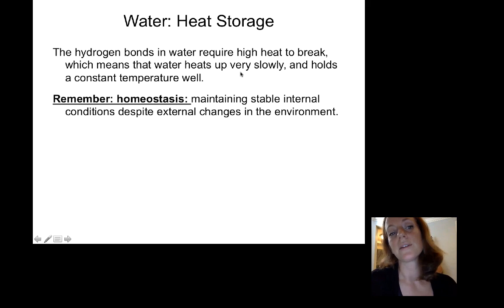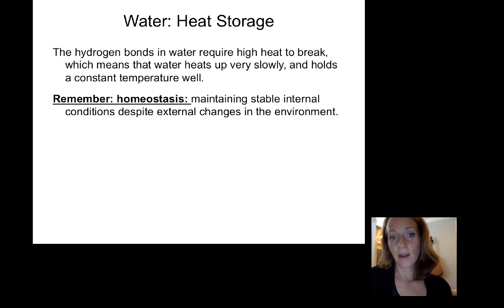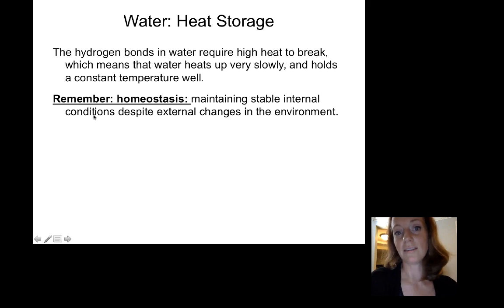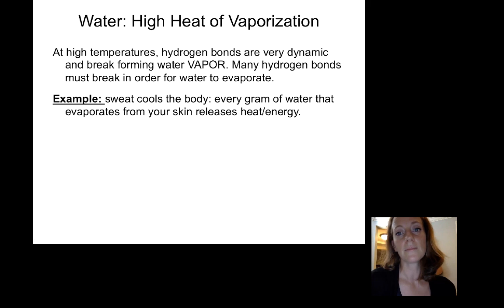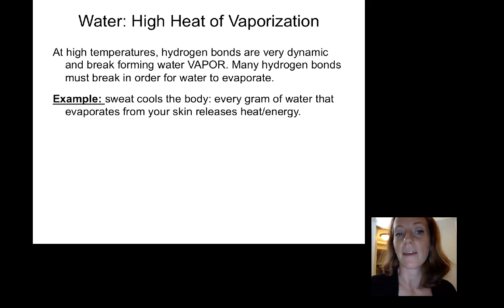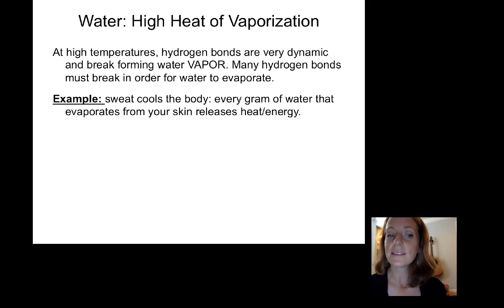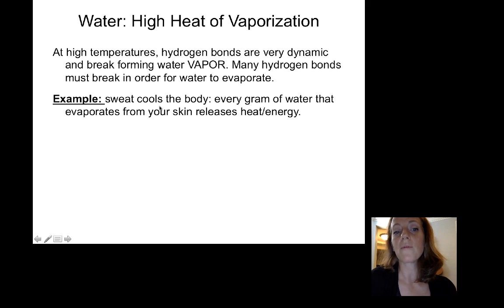Another property of water is heat storage. Hydrogen bonds require very high heat to break, so water heats up very slowly and holds a constant temperature — it resists change, which connects back to homeostasis. The amount of water in our body helps prevent large temperature changes despite external environmental changes. Water also has a high heat of vaporization: at high temperatures, hydrogen bonds break to form water vapor. Many hydrogen bonds must break for water to evaporate, releasing energy — this is why sweat cools the body, because every gram of water that evaporates from your skin releases a little heat.